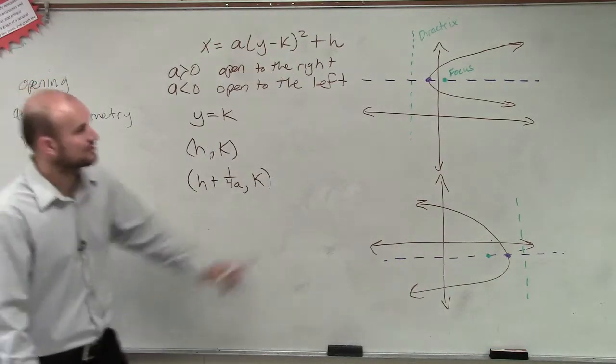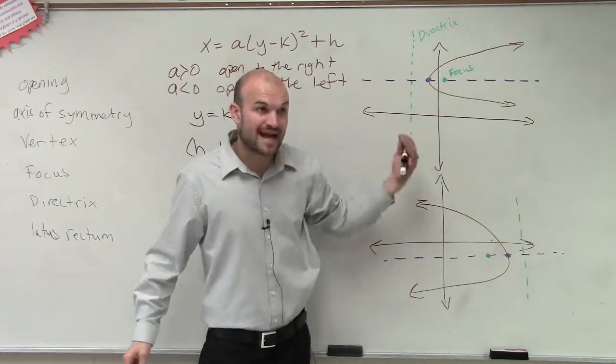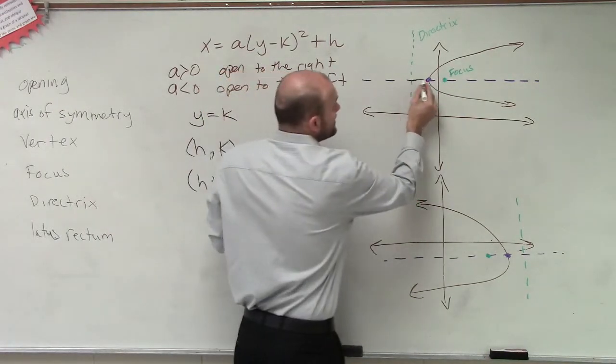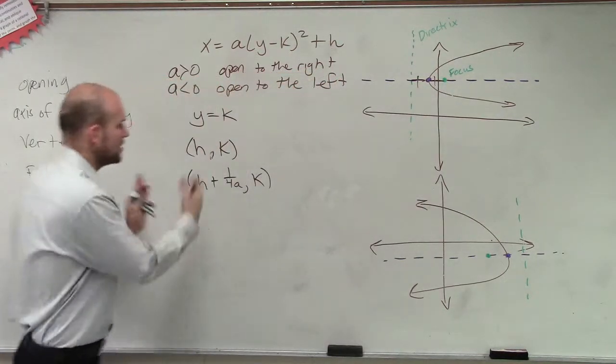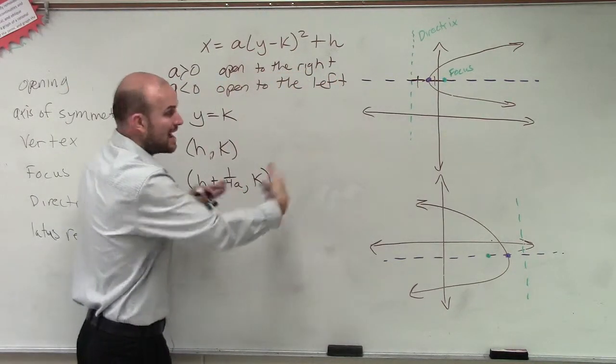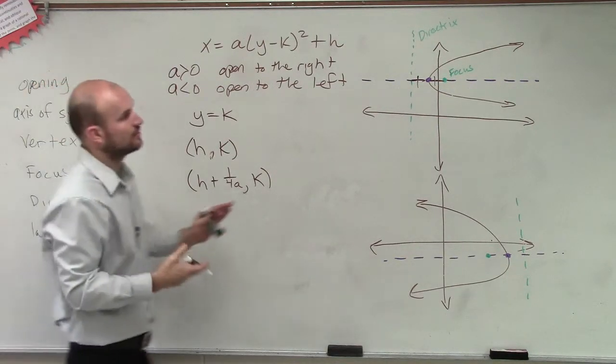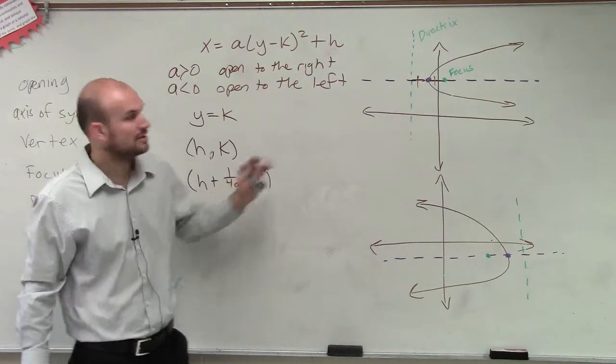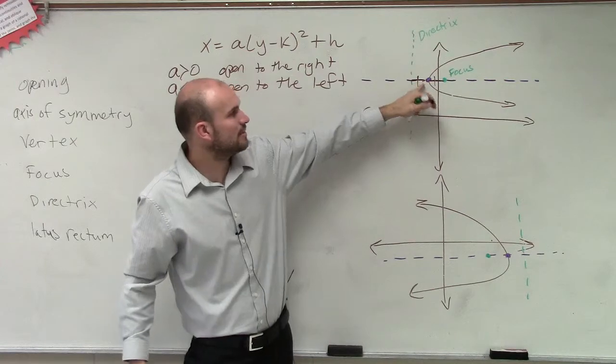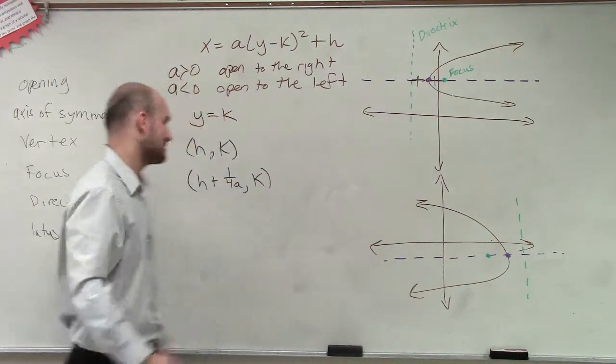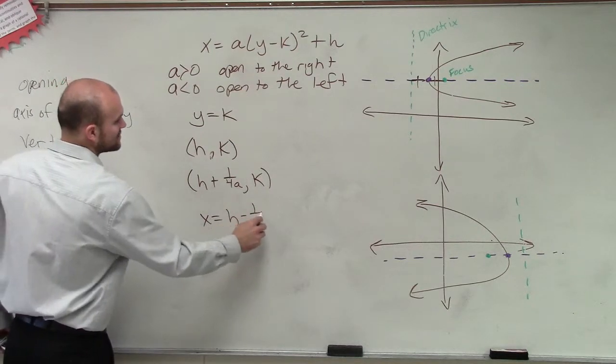Now let's find the directrix. So if I add to find the focus, to find the directrix, I now have to subtract. And it's going to be the exact same value, right? Because the distance from here to here are exactly the same. So if I add one over four a, I now have to subtract, correct? But remember, we're not subtracting it from h. What we want to do is, I'm sorry, we are subtracting h, but we want to look at it's going to be a vertical line now. So now it's going to be x equals h minus one over four a.